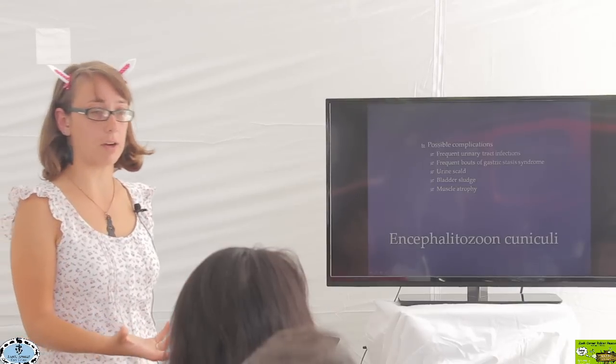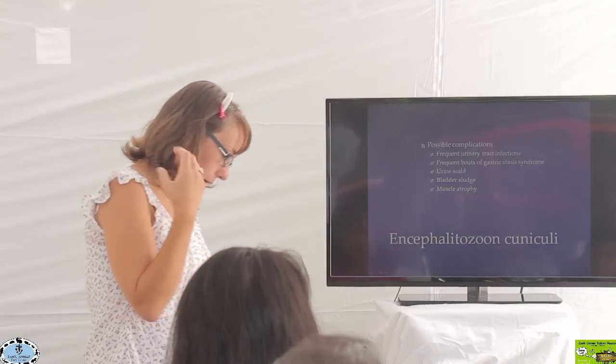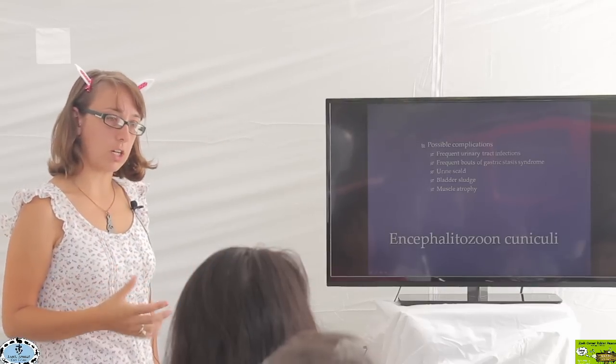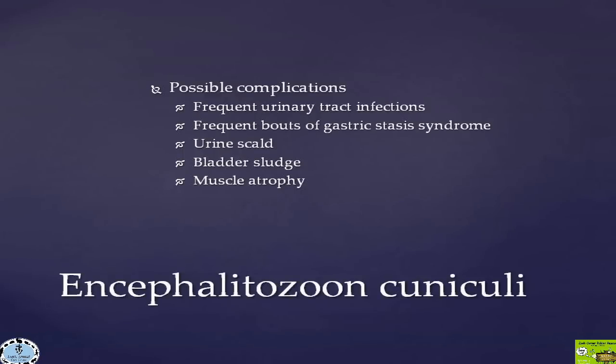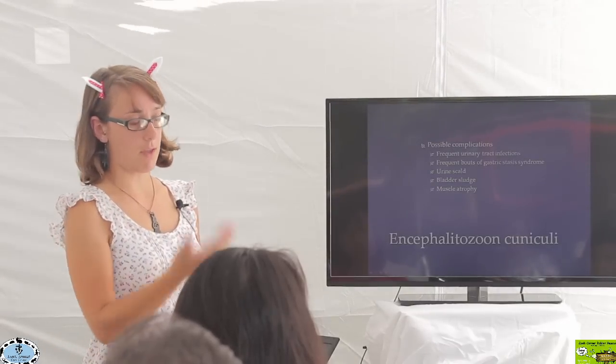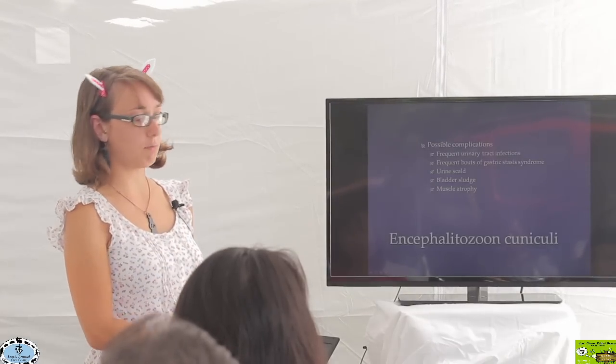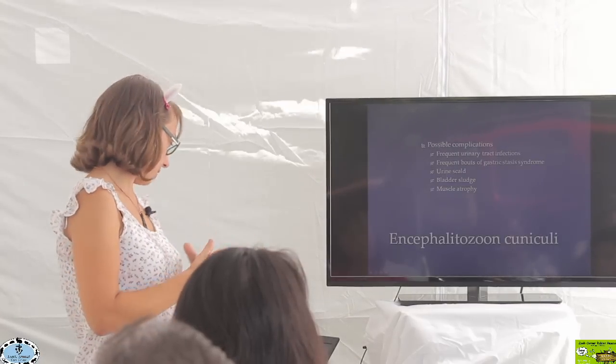There are complications that can arise from having E. cuniculi, just like with bladder sludge. Problems that can occur include things like bladder sludge and frequent urinary tract infections. If the organism is affecting the nervous system and causing hind end paresis or paralysis, they're not able to move those hind limbs as well. They may not be able to completely empty their bladder. If they can't completely empty their bladder, they may have sludge accumulate or be more likely to develop urinary tract infections.